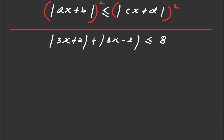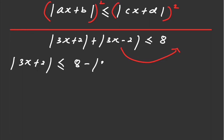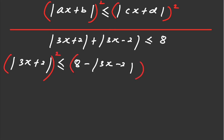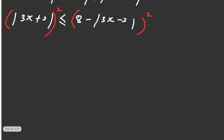In this case, I choose to move the other modulus to the other side. So this is what we have now — there is a modulus on the left and the right hand side, and it's easier to square it now. We'll do a square on both sides: square the left hand side and the right hand side as well.